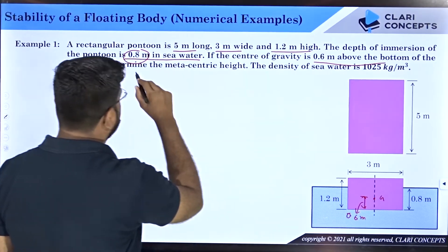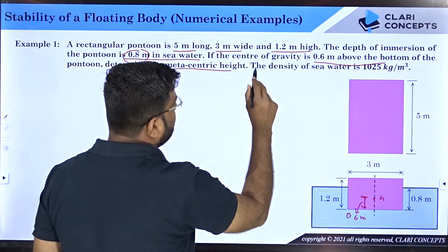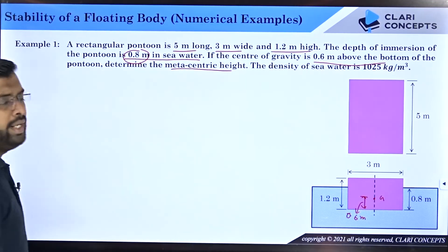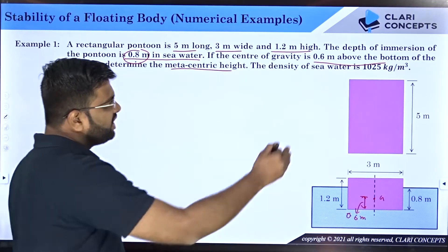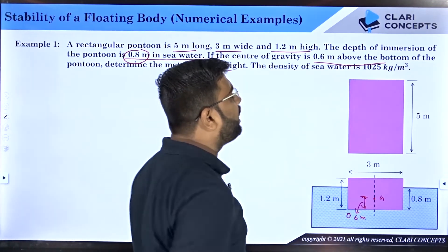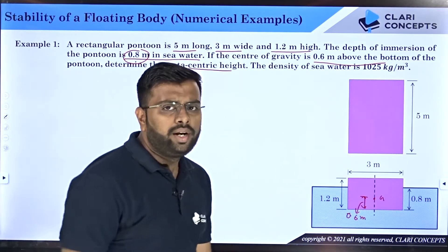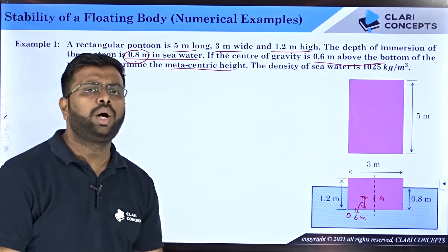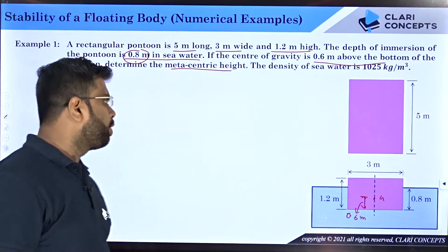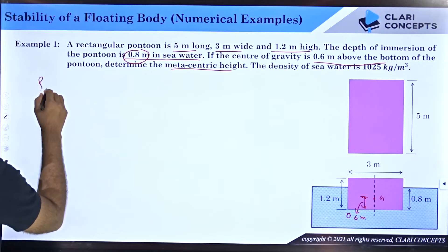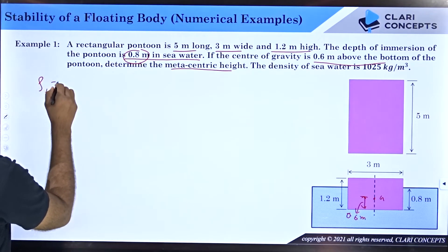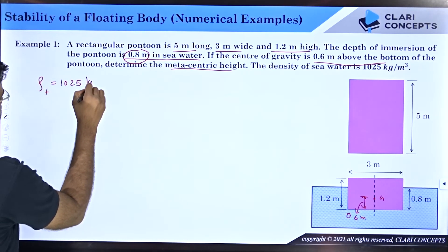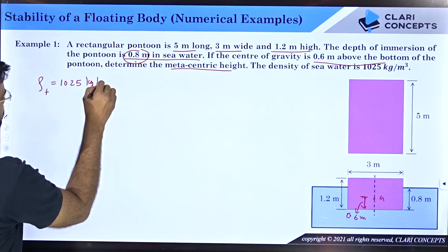We need to determine the metacentric height. The density of sea water is given as 1025 kg per meter cube. Note that many times when just 'water' is mentioned and density is not given, you can assume it to be 1000 kg per meter cube. Here the fluid is sea water, so the density is 1025 kg per meter cube.